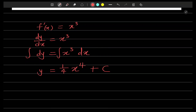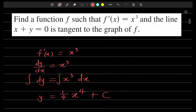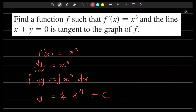So ideally f of x is one fourth x to the fourth plus C, but we need to know what C is, because what we have is a family of functions. That is where the second piece of information becomes relevant. The question tells us that x plus y equals zero is tangent to the graph. Remember: tangent lines only touch a function at exactly one point, and at the point of contact the slope of the tangent equals the derivative of the function at that point.